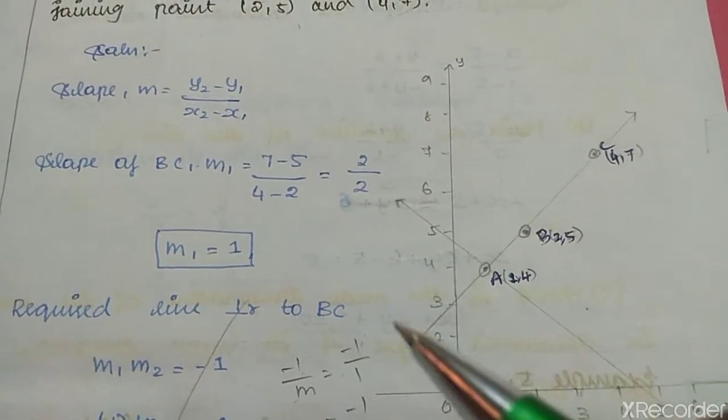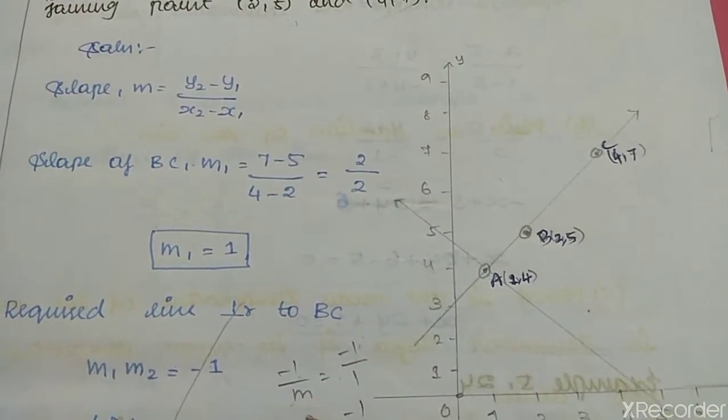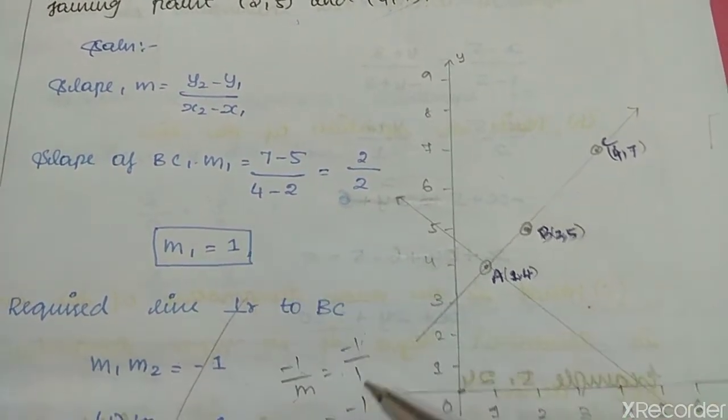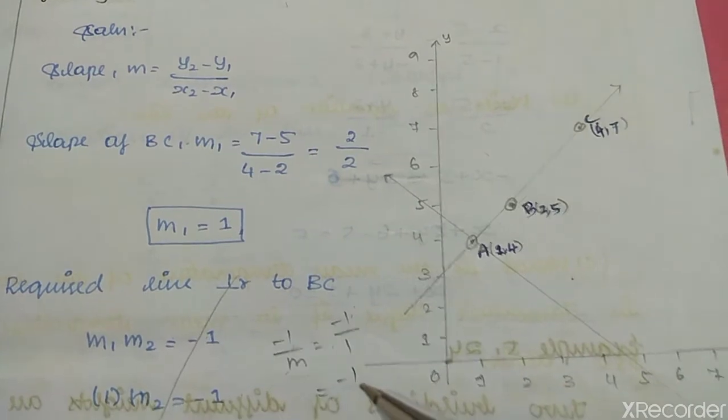The required line is perpendicular to BC. Using the perpendicular condition, m1 × m2 = -1, we get -1/m = -1/1 = -1.